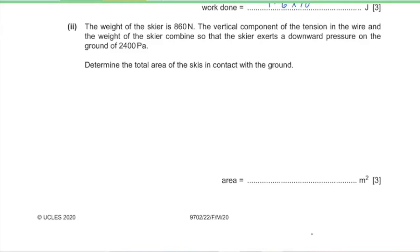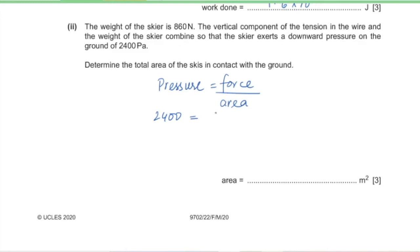Part 2: the weight of the skier is 860 N. The vertical component of the tension and the weight combine so that the skier exerts a downward pressure of 2400 Pa on the ground. Determine the total area of the skis in contact with the ground. Pressure = force/area. The net downward force = 860 − 140 sin30°. Dividing by 2400 Pa gives an area of 0.33 m².